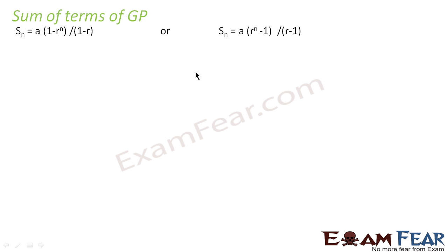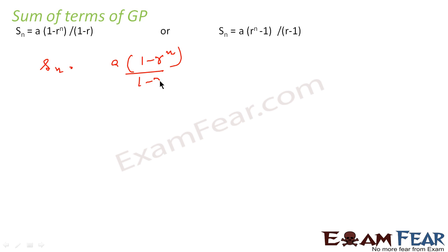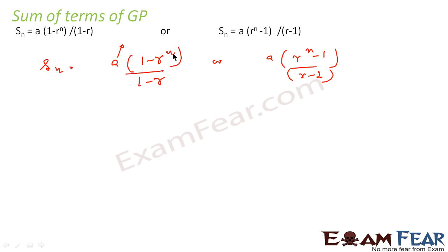We'll introduce the sum of terms of a GP. The sum of terms of a GP is written as Sn equals a times (1 minus r to the power n) by (1 minus r), or equivalently a times (r to the power n minus 1) by (r minus 1). Both forms are the same. When r is less than 1 we use the first form, and when r is greater than 1 we use the second, since people are more comfortable dealing with positive equations.